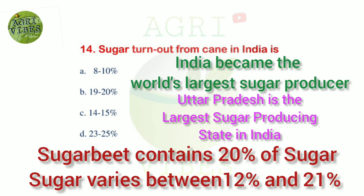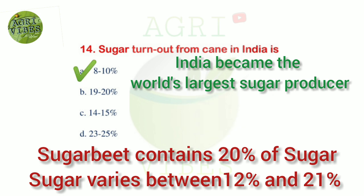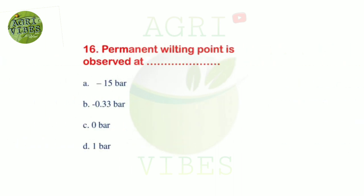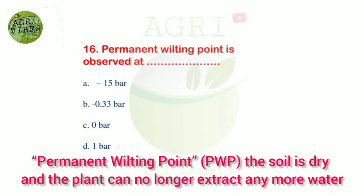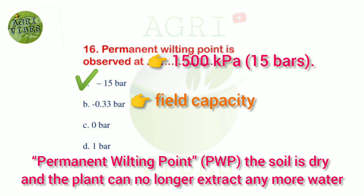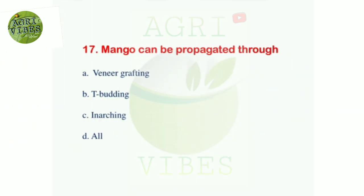Next question: sugar recovery from cane in India is how much percent? Options: 8 to 10 percent, 19 to 20 percent, 14 to 15 percent, and 23 to 25 percent. Correct answer is option A, 8 to 10 percent. Next question: the curve of normal distribution is — options: bell shaped, parabolic, sigmoid, and irregular but upwards. Correct answer is bell shaped. Next question: permanent wilting point is observed at what bar? Options: 15 bar, 0.33 bar, 0 bar, and 1 bar. Correct answer is option A, 15 bar, meaning 1500 kilopascal.